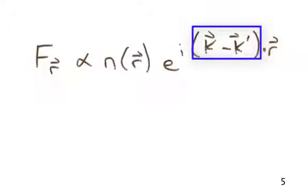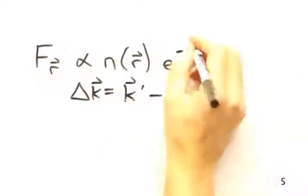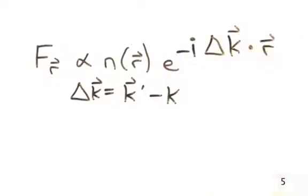Okay, so now we have these two wave vectors to worry about. Can't we just smoosh them together into one term? You can, and we call that delta k, or k prime minus k. Love it. So are we done?